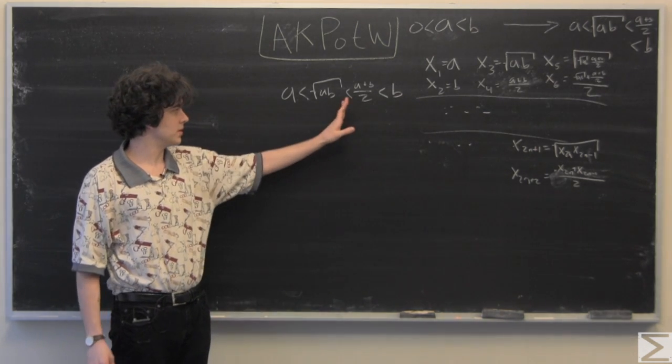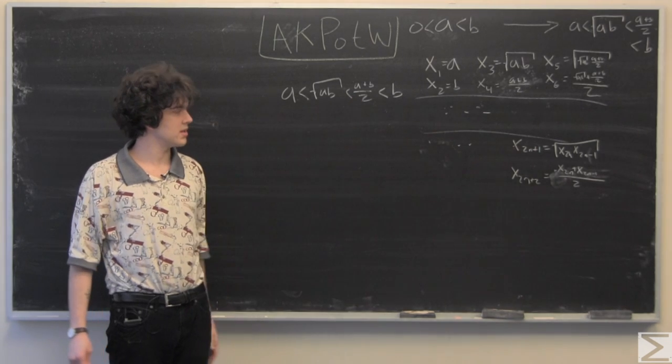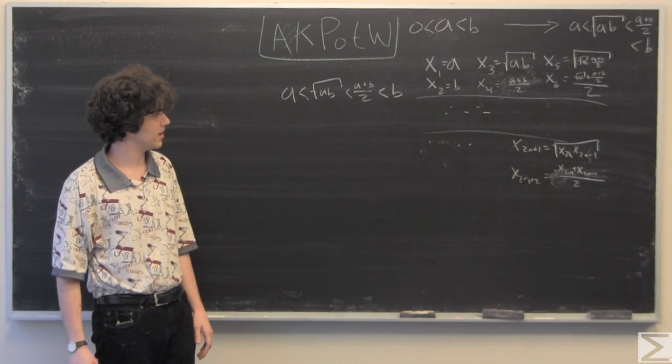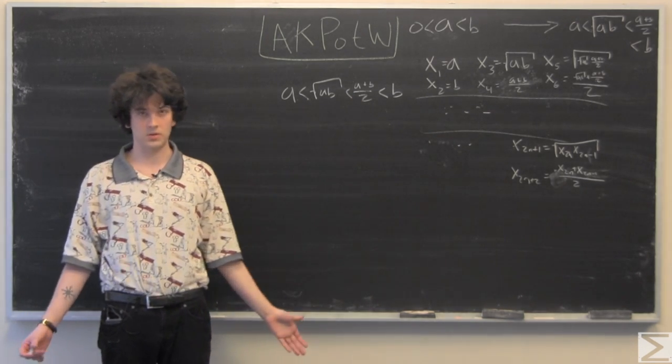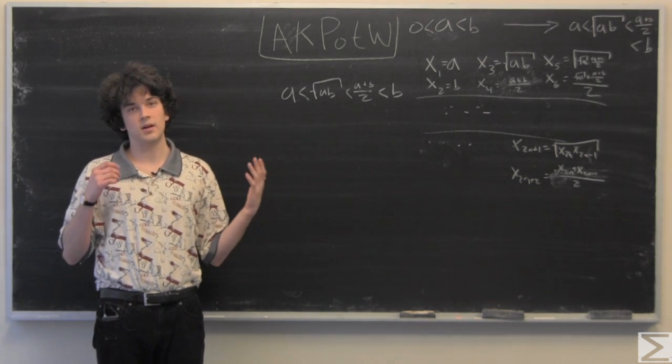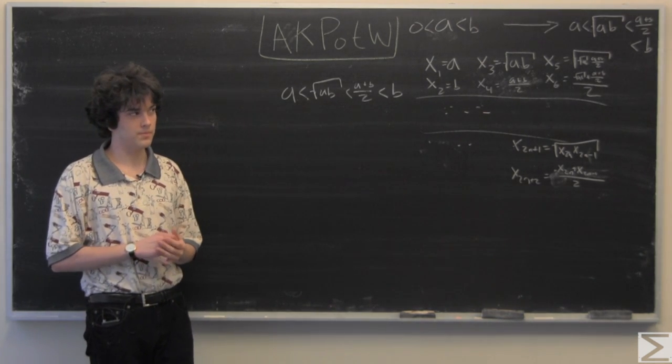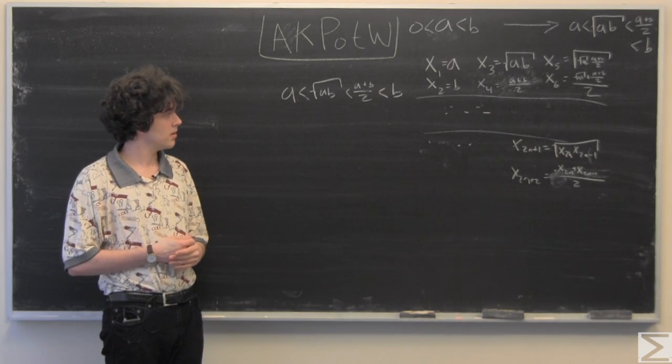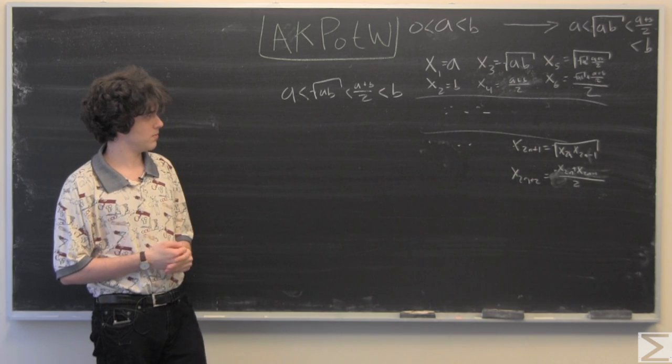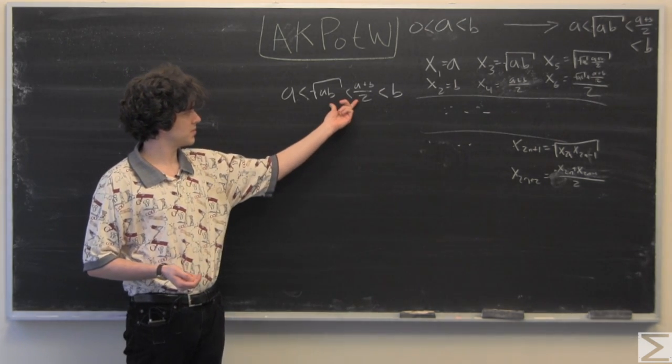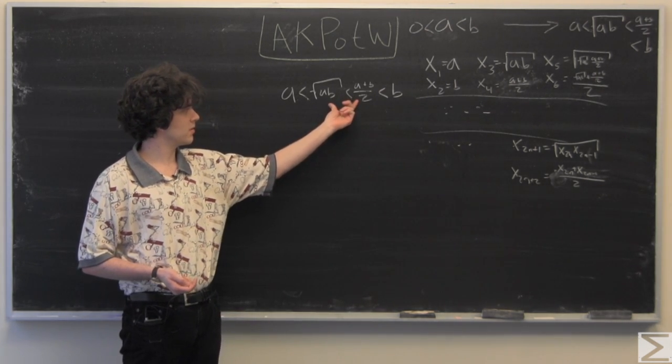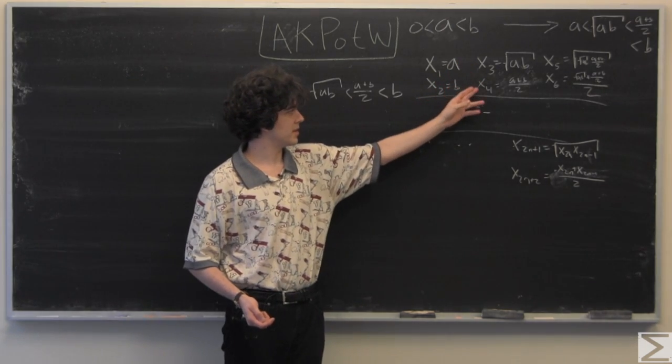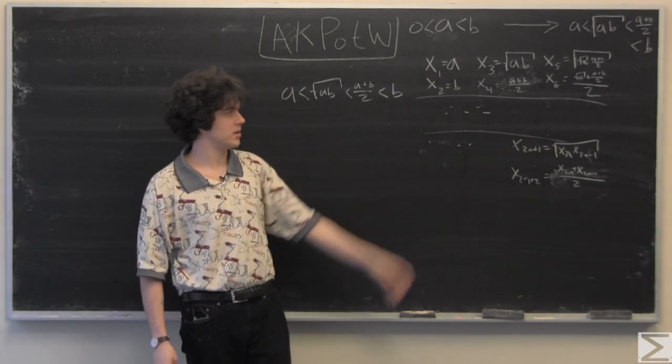We have inside of that interval the geometric and arithmetic mean of a and b, which is also non-empty because the geometric is strictly less than the arithmetic, since last week we saw the only time those two values are equal is when a equals b.